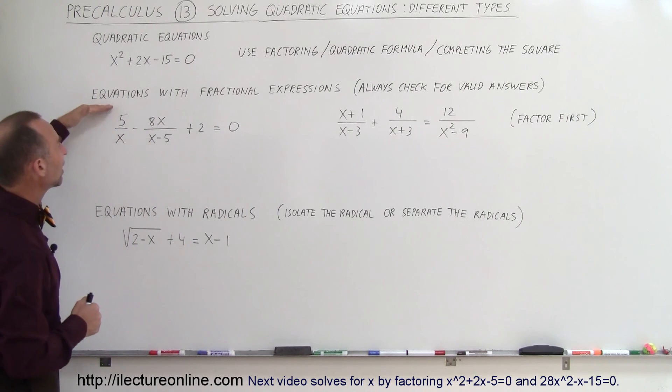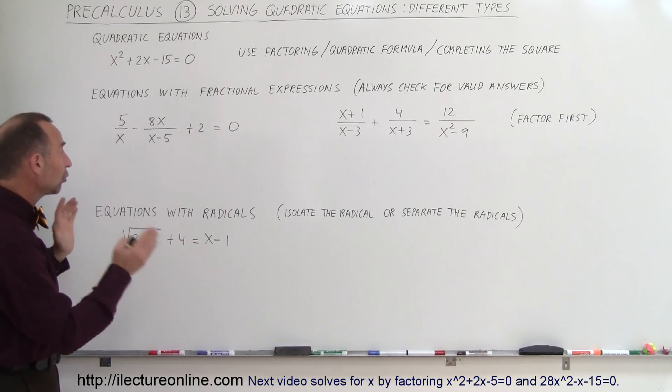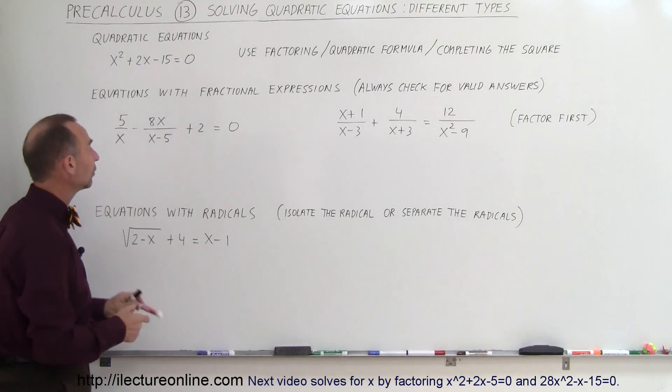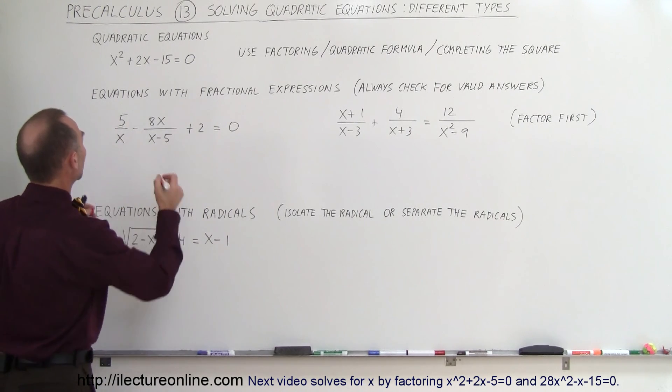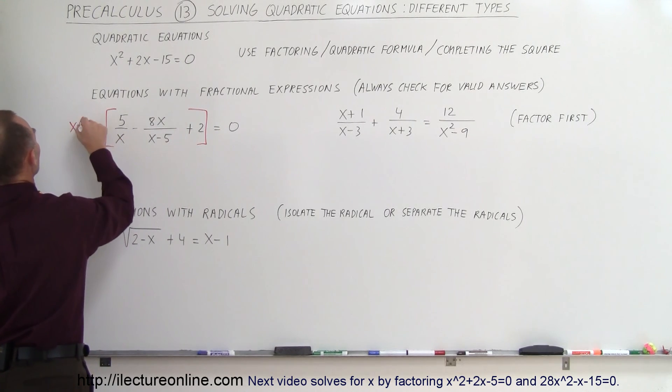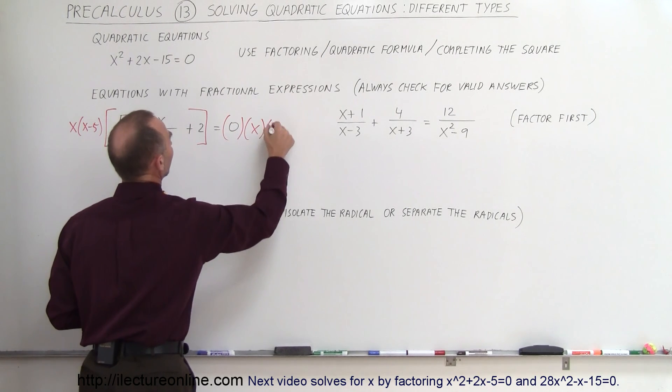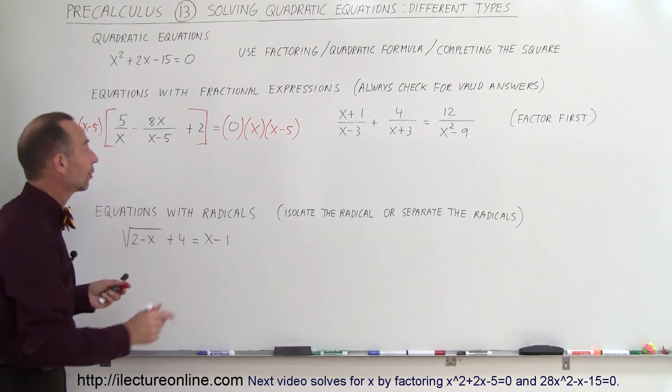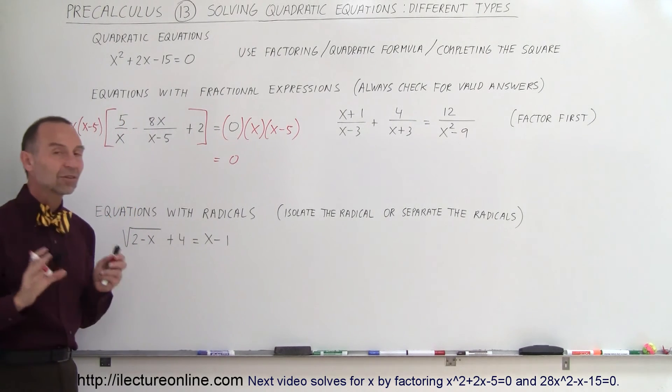Next, you might have equations that have fractional expressions like this. In this case, you want to go ahead and multiply both sides by the lowest common denominator. And let me show you what that would look like in this case. Here you can see that the lowest common denominator would be the product of these two. So what you want to do here is multiply both sides by x times x minus 5. And here, of course, this times x times x minus 5. But of course, 0 times anything still will be 0. So the right side will be 0. And here, of course, you have to multiply that out. So that's the general technique.